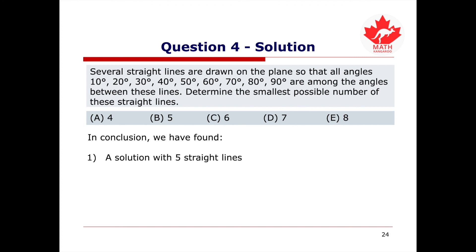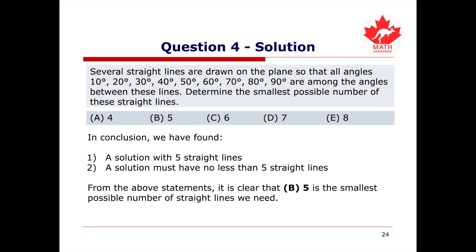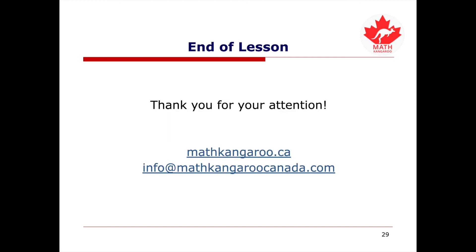In conclusion, we found one solution with five straight lines and proved that a solution must have no fewer than five straight lines. Therefore, five is the smallest possible number of straight lines needed, corresponding to answer choice B. Thank you for watching the video — hope you enjoyed it and learned something new.